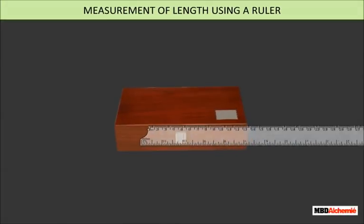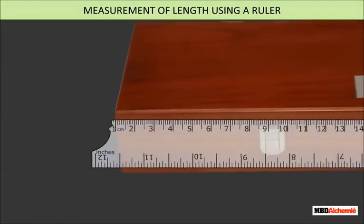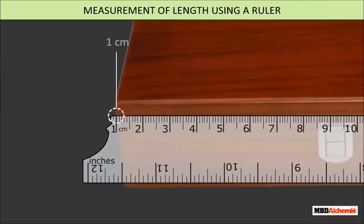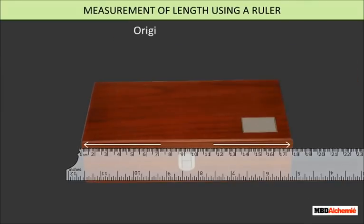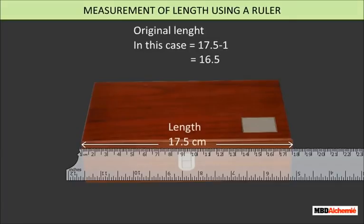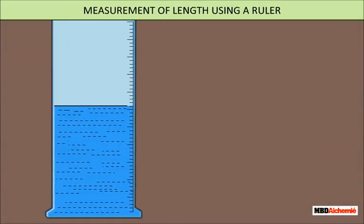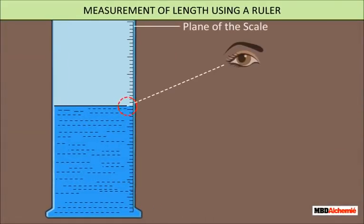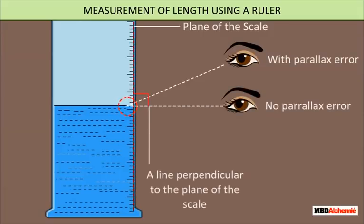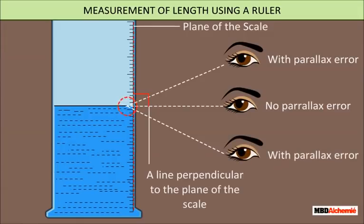If the edge of the ruler is broken, measure from any appropriate mark — say one centimeter instead of zero — and then subtract that value from the final reading. While taking the reading, keep your eye vertically above the object. Any deviation from this position will give a wrong measurement, known as an error due to parallax, which is caused by the thickness of the ruler or scale.